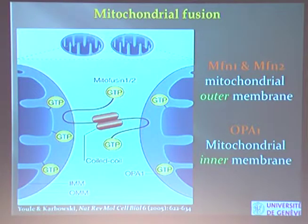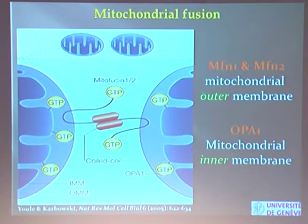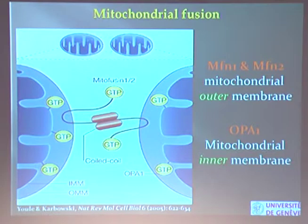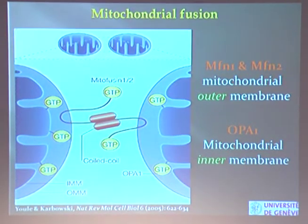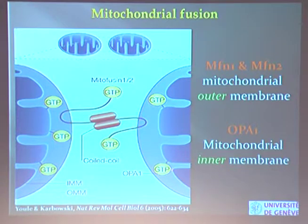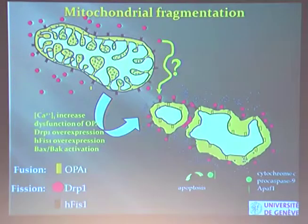Just a few words on mitochondrial fusion. Mitofusin 1 and mitofusin 2 are located on the outer membrane — mitochondria are surrounded by two membranes, the outer membrane and the inner membrane. The mitofusins push the outer membranes close and the two membranes fuse, giving you a longer mitochondrion. OPA1 is in the inner membrane and helps in this process. Now you can forget about fusion because my talk will be about fragmentation — fission.